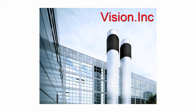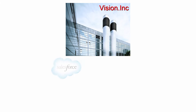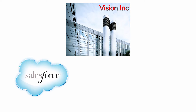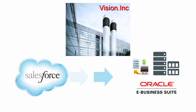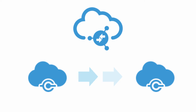The sales team at Vision Incorporated has decided to modernize their sales ecosystem by subscribing to Salesforce.com for their customer relationship management requirements. This means they now need to integrate the data in Salesforce.com with their on-premise Oracle E-Business Suite. They've chosen Oracle Integration Cloud Service, or ICS, as their strategic platform for this integration. This demo illustrates how an opportunity can be converted into an order with just a few clicks using ICS as the integration platform.